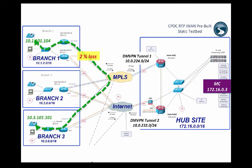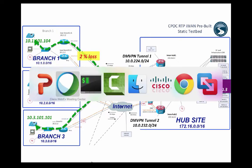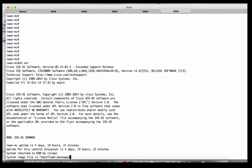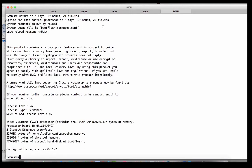We can now introduce the intelligent path control portion of iWAN, which involves this master controller — a domain master controller. These three branches and the hub site are all in the same domain, which I call domain default. We have a domain master controller at 172.16.0.3. The first cool thing about this is that it's actually a CSR1000V — iOS XE on a VM — acting as the master controller, because the master controller is really more of a control plane brain.